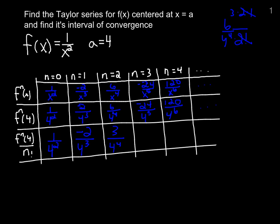If we have a negative 24 over 4 to the 5th, and we need to divide that by 3 factorial, then 3 factorial being 6, would turn that into a negative 4 over 4 to the 5th. 120 divided by 4 to the 6th, and a 4 factorial, leaves us with a positive 5 over 4 to the 6th.